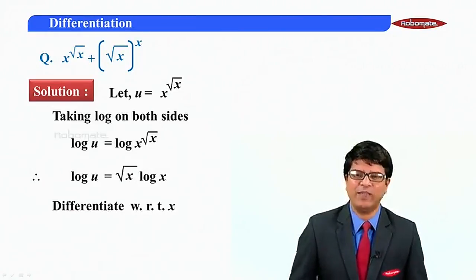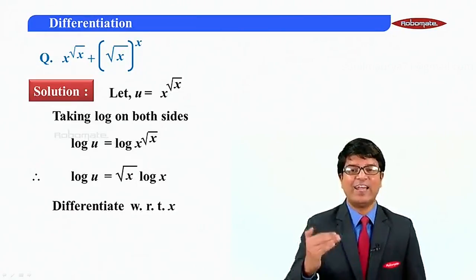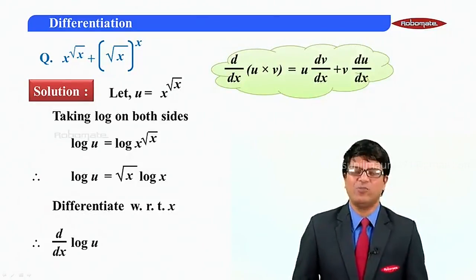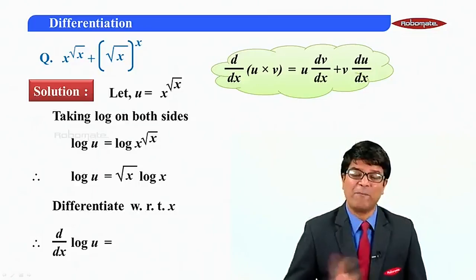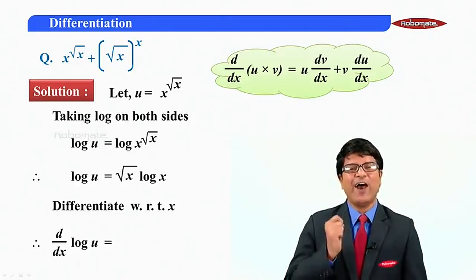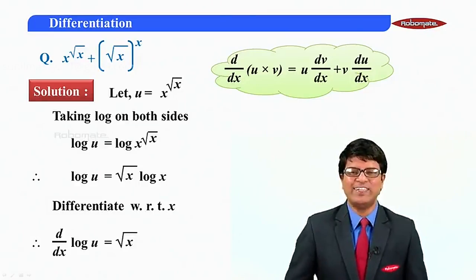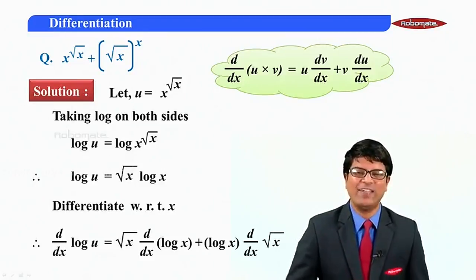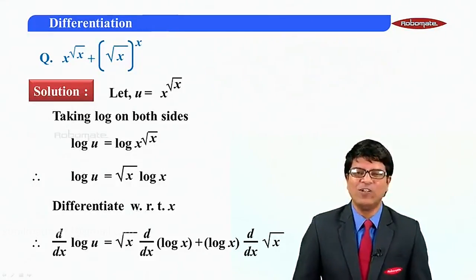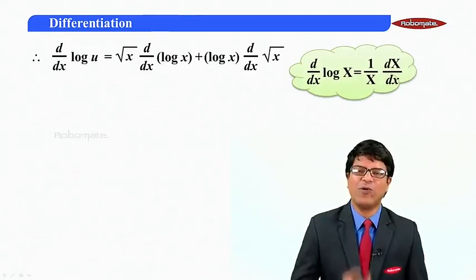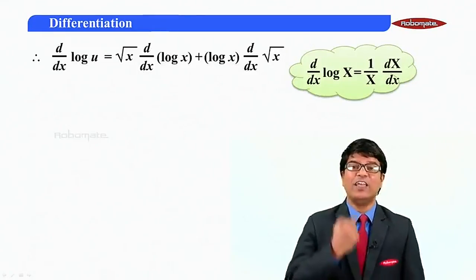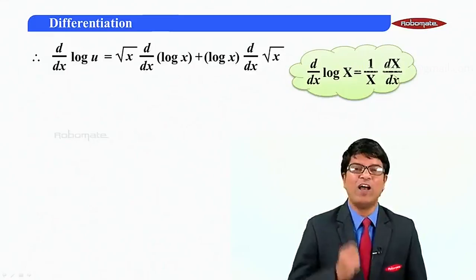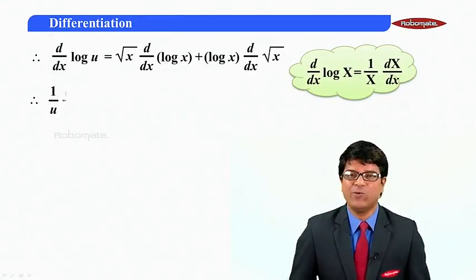Let us differentiate with respect to x. The derivative of log u is d by dx of log u. There are two variables separated by multiplication, so we apply the product rule: root x times d by dx of log x plus log x times d by dx of root x. The derivative of log u, as a composite function, will be one by u.